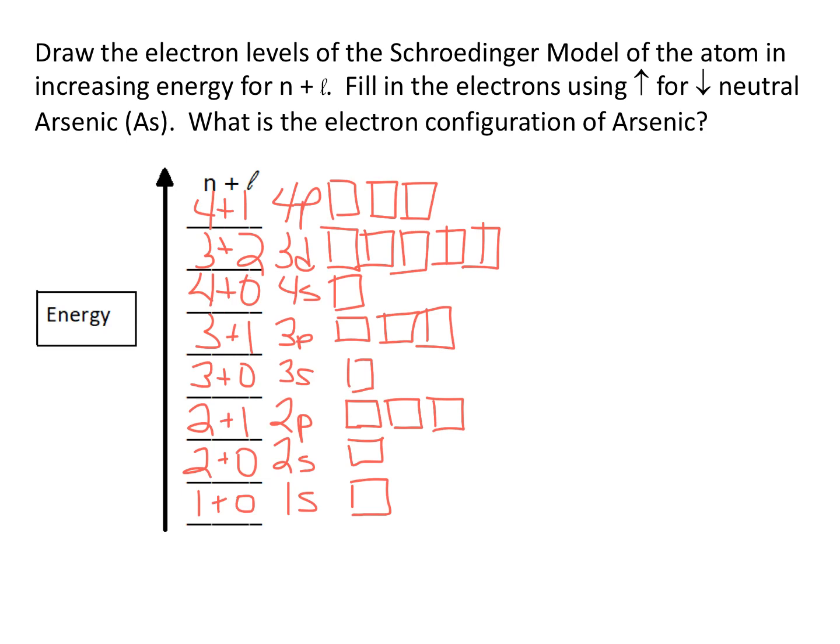Now it's time to put in our electrons. When I check the periodic table for arsenic, it turns out that arsenic has 33 electrons. So it's now up to me to put in 33 electrons.